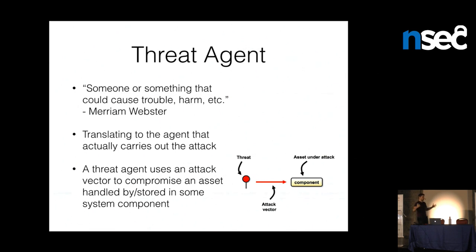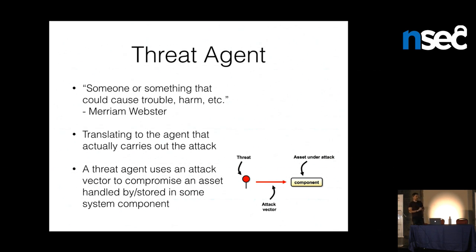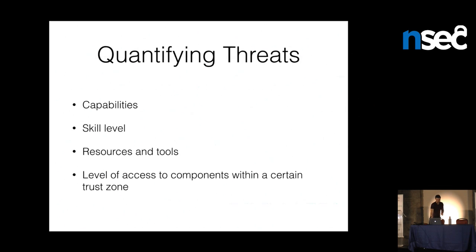A threat — there are a lot of different definitions out there. In this context, we're going to refer to a threat as an agent who uses an attack vector to compromise an asset going through some component. Throughout a bigger system, an attacker might go through multiple components and bypass multiple controls to get to an asset. All threats are different, and we need to be able to quantify our threats so we know what we're defending against and who we're defending against.